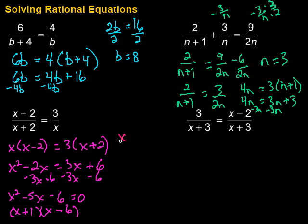Then, I set each of these equal to 0 and solve. So, x plus 1 equals 0, which is going to give us subtract 1 on both sides. x equals negative 1. And finally, x minus 6 equals 0. So we add 6 on both sides. And we are left with x equals 6.